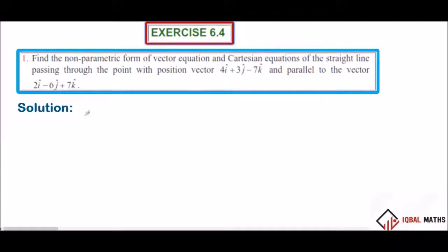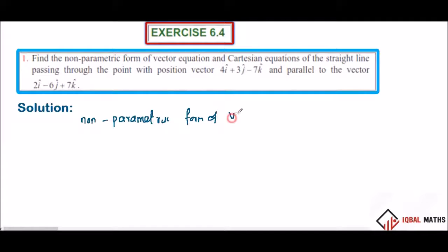First, we will find the non-parametric equation. The formula is r minus a, cross b equals zero.